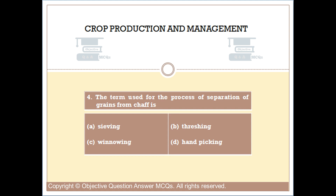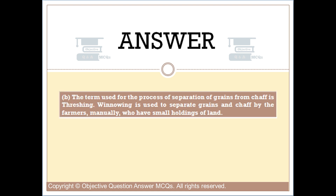Question number four: the term used for the process of separation of grains from chaff. Option A: sieving. Option B: threshing. Option C: winnowing. Option D: handpicking. The right answer is option B. The term used for the process of separation of grains from chaff is threshing. Winnowing is used to separate grains and chaff by farmers manually who have small holdings of land.